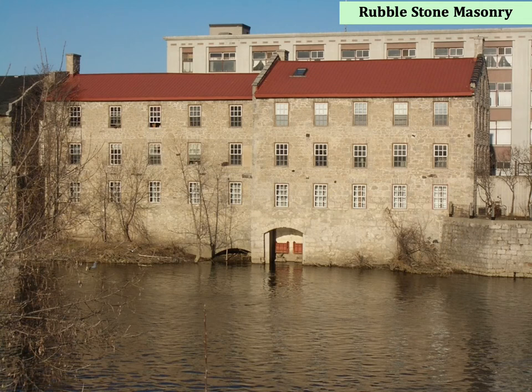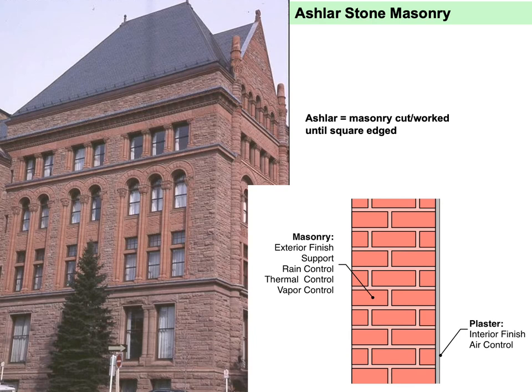The huge advantage of load-bearing masonry is that the structure is also the exterior finish, often the interior finish, and it provides protection from wind, rain, sun, animals, impact, and even marauding bands. This is a load-bearing cut stone masonry example from the late 1800s in Toronto — a University of Toronto building — where window openings are kept modest and tend to be more vertically oriented for better ventilation, daylighting, and structural performance, taking advantage of masonry's incredible compressive strength.